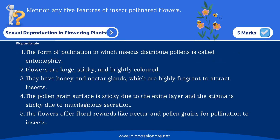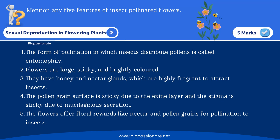Here is a question for five marks: mention any five features of insect-pollinated flowers. It comes under the concept of pollination, where you are discussing about chasmogamous flowers. In this question they have asked specifically about the features of insect-pollinated flowers.